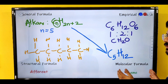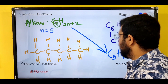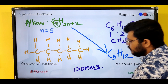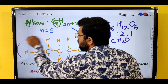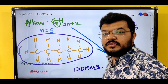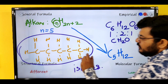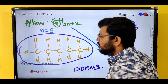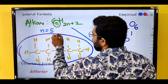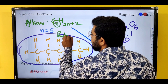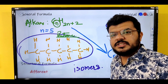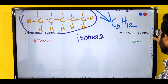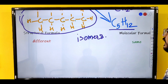Compounds having the same molecular formula but different structural formula are known as isomers. We are going to understand the isomers of C₅H₁₂. The first one has 5 carbons in a straight chain with no branching, so it is simply pentane. There are no double bonds — this is pentane. Let's see the other structural arrangements of C₅H₁₂.